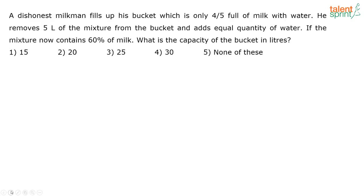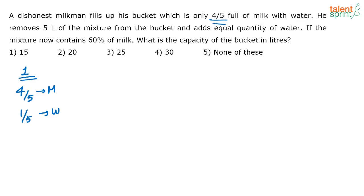Let's understand what is given. There is a bucket which has four-fifths of milk in it, and he is adding water to fill it. So four-fifths is milk and one-fifth is water. Then five liters of this mixture is removed and an equal quantity of water is added back. After this, the total amount of milk in the mixture is 60%.